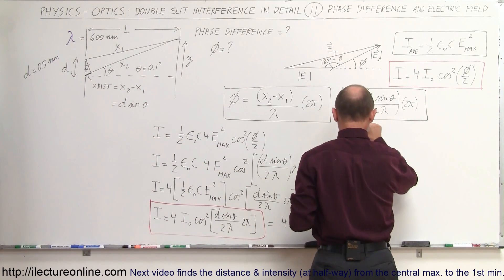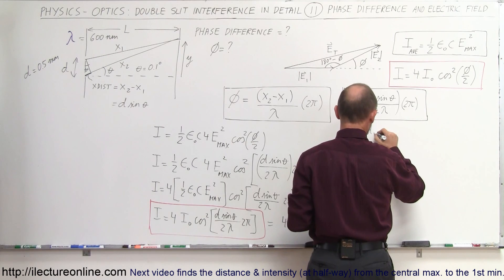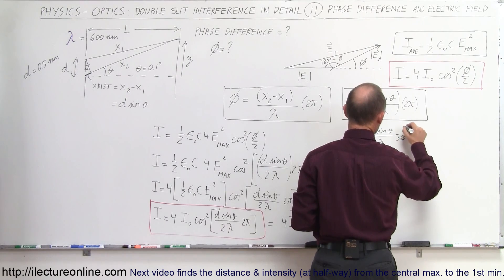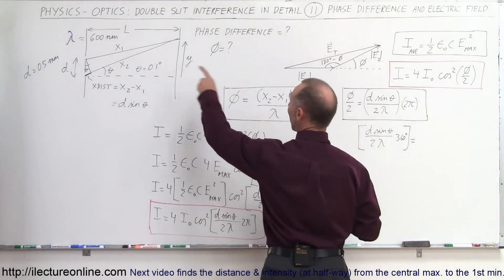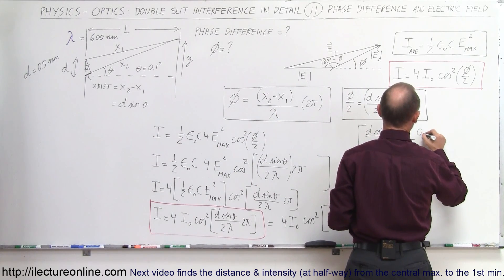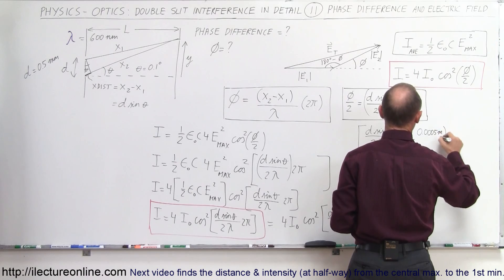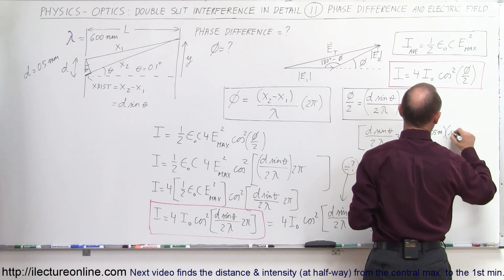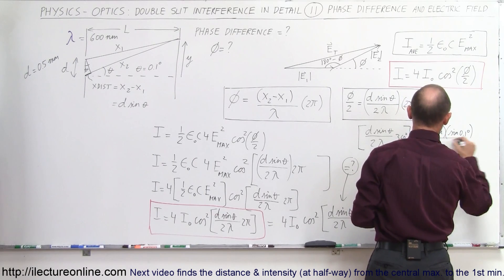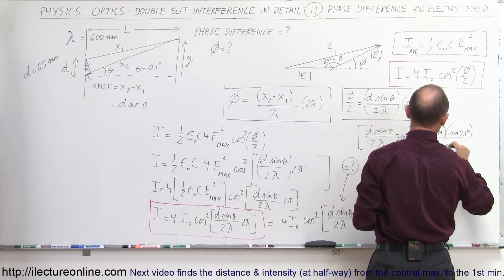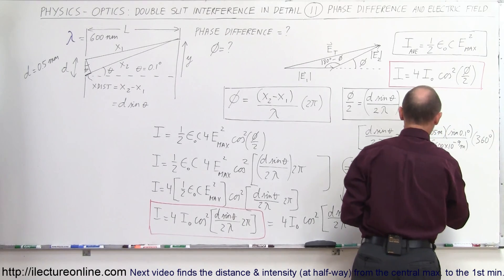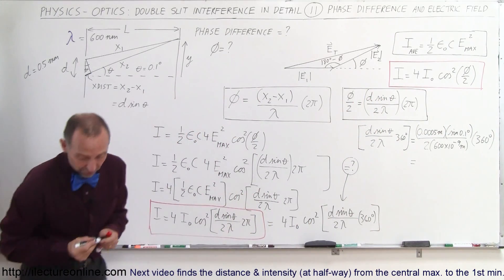The quantity D sinθ divided by 2λ times 360° equals: D = 0.0005 m, times sine of 0.1 degrees, divided by 2 times 600×10⁻⁹ m, times 360 degrees. Plugging in the values gives 0.727, so this is 0.727 × 360° = 261.8 degrees. That value represents the phase angle divided by 2.